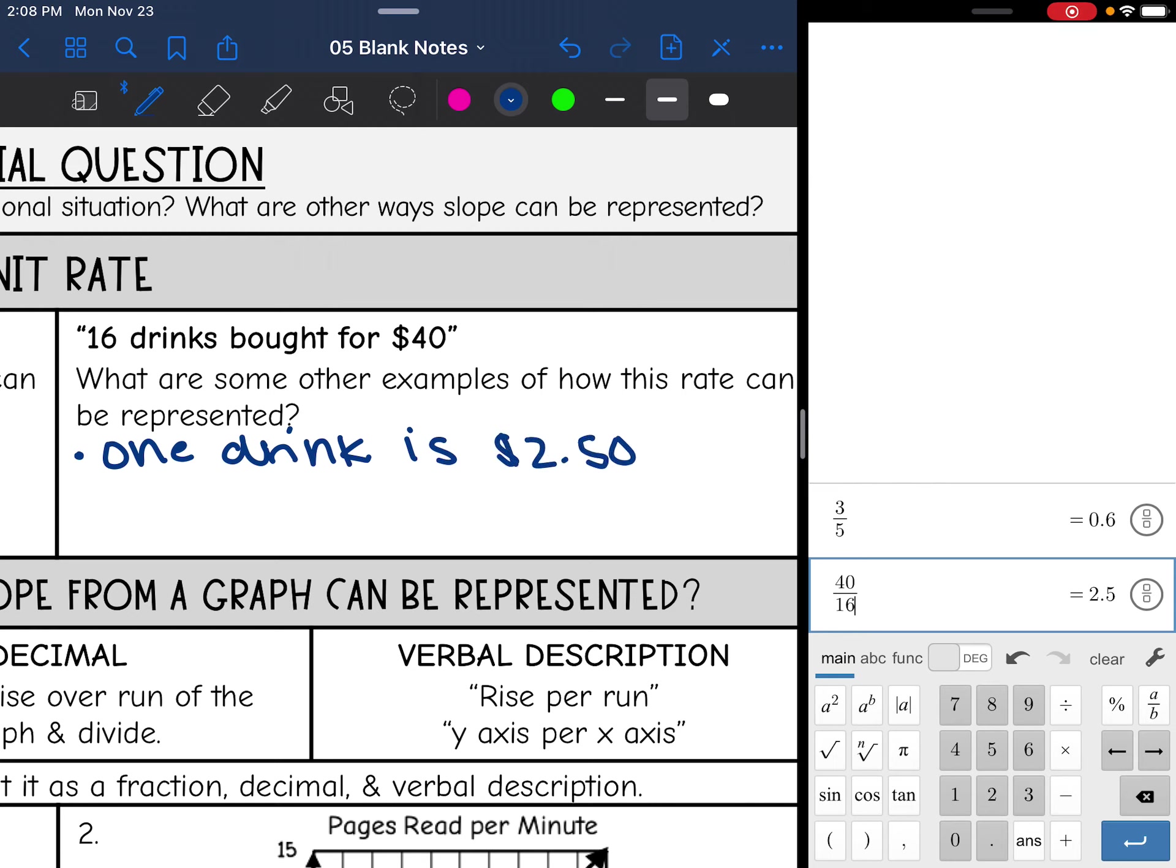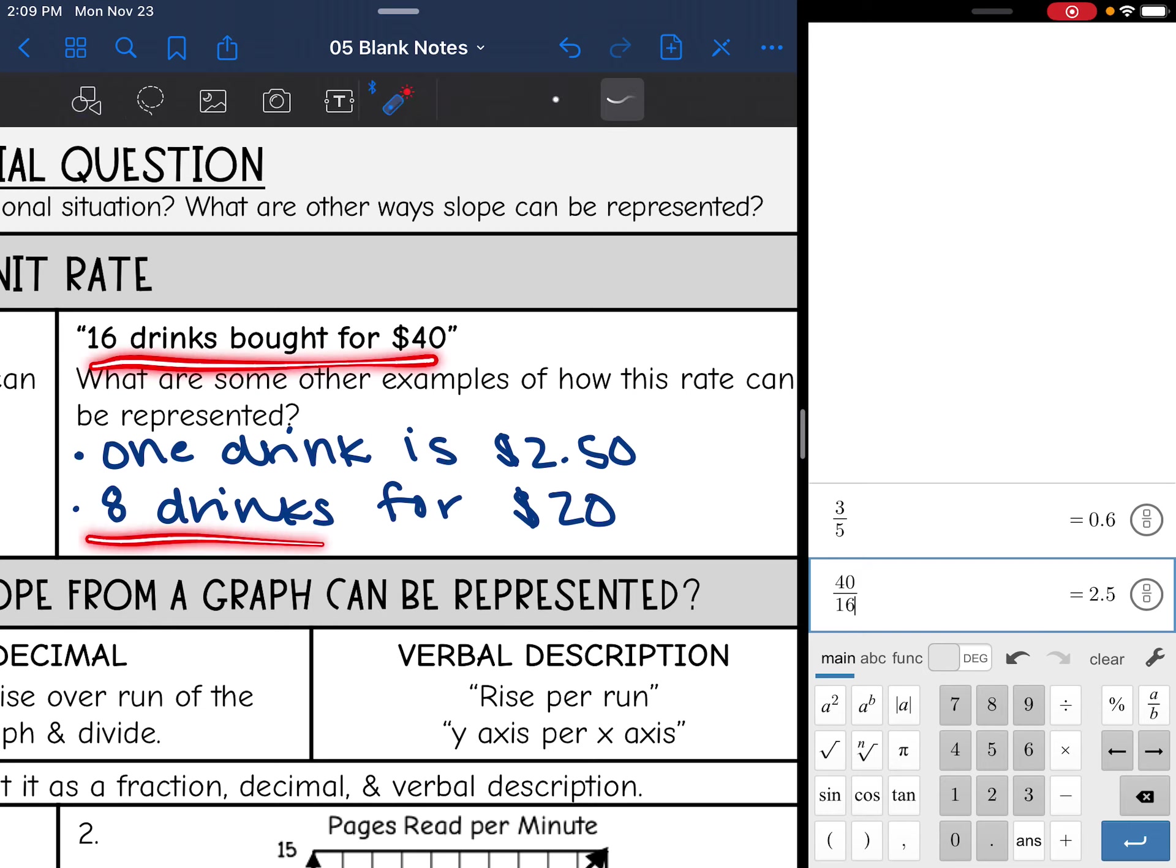Another rate I can think of is if I half the original rate, it would be eight drinks for $20. So there's just a couple of examples of how we can adjust a rate, and it still has the same unit rate. These two things right here still have a unit rate of $2.50.